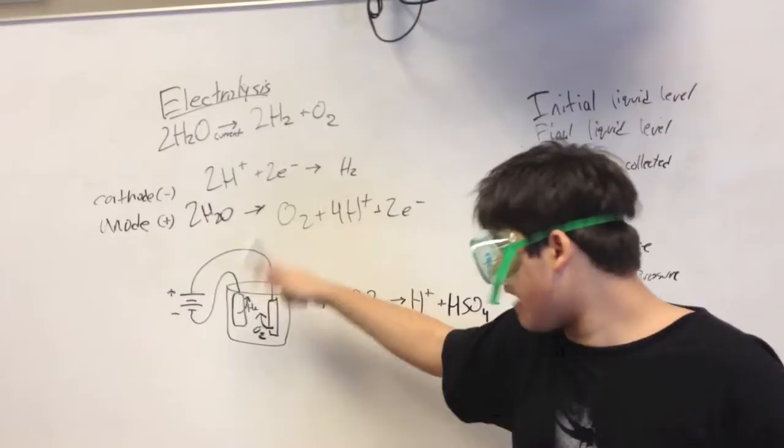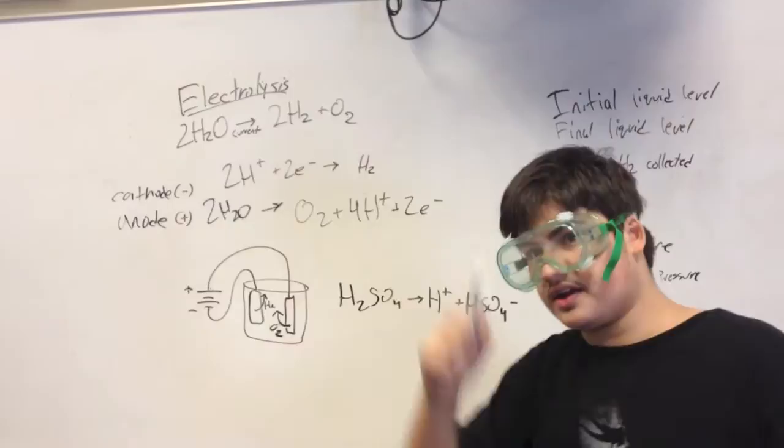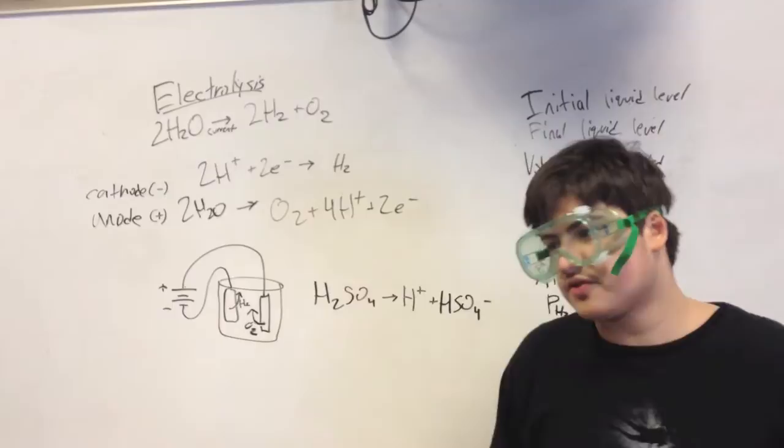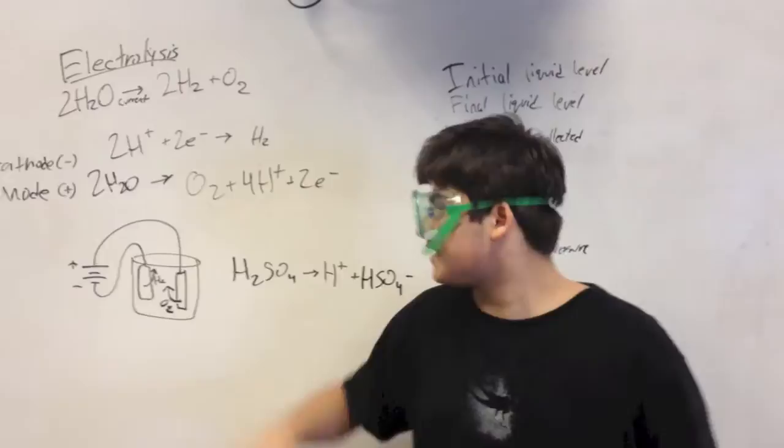At the anode, which is positive in electrolysis, it is reversed. Now, to get electric current to run through the water, we need to add an electrolyte. Both ions will facilitate the passage of the current through the water and make this reaction work.